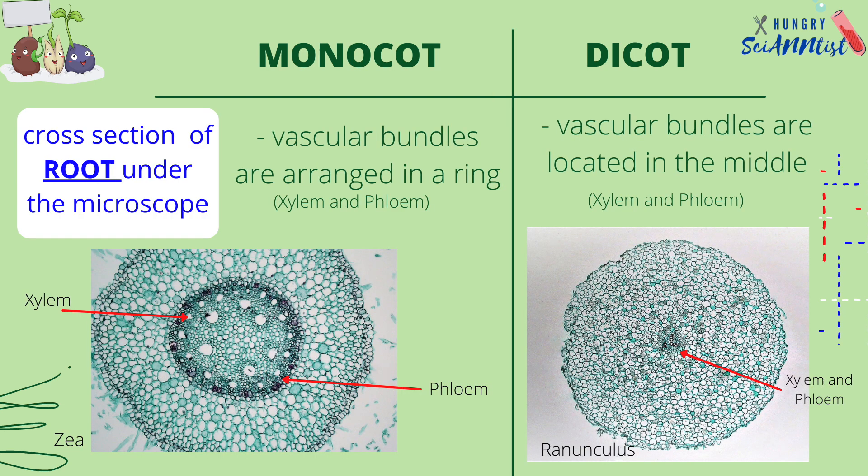Vascular bundles in a monocot root are arranged in a ring, while vascular bundles in a dicot root are located in the middle.